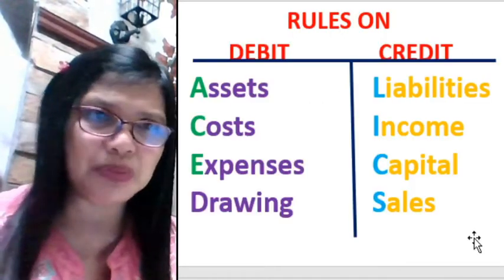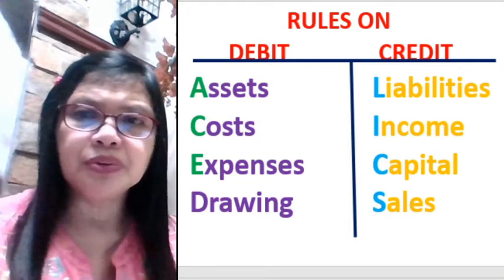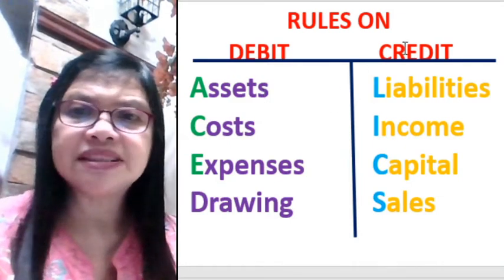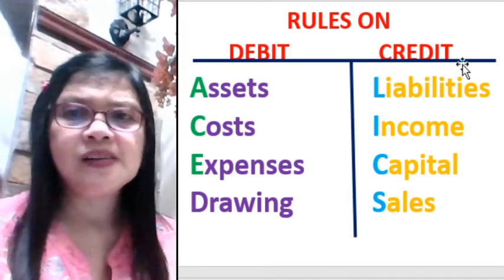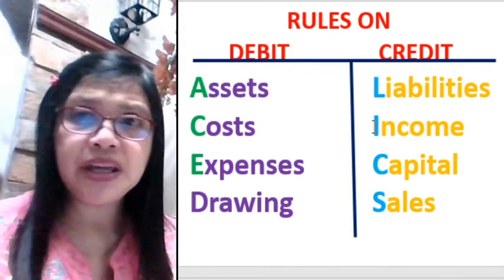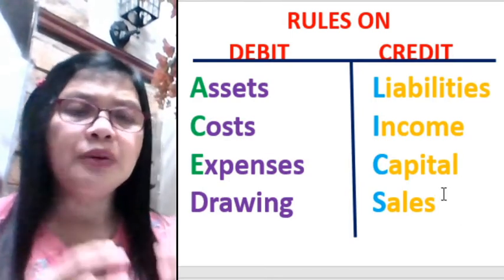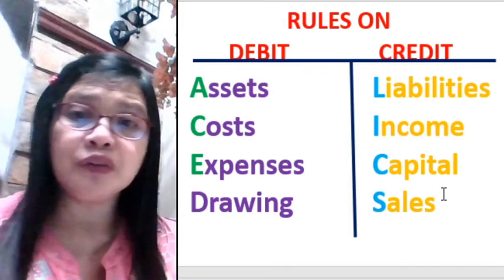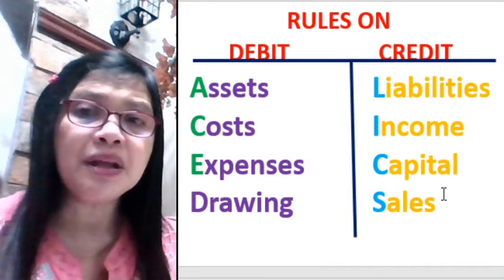Let's go to the rules of debit and credit — a very common question in the exam. A T-account looks like the letter T. The debit column has assets, costs, expenses, and drawing. The credit column has liabilities, income, capital, and sales accounts. We must memorize these normal balances: assets, costs, expenses, and drawing have a normal debit balance; liabilities, income, capital, and sales have a normal credit balance.